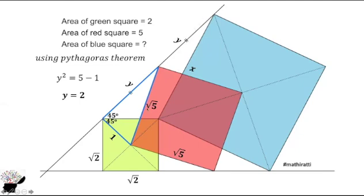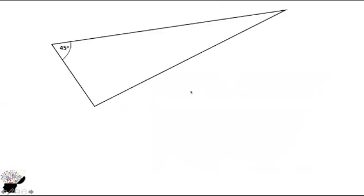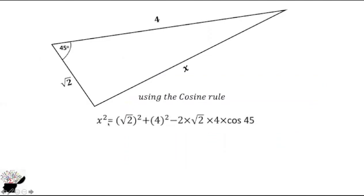Now we know this distance. We also know the distance from here to here is √2. So we can find x by using the cosine rule. Using the cosine rule, x squared equals (√2)² plus 4² minus 2√2 times 4 times cos 45. Doing the calculation, you get x squared equals 10.